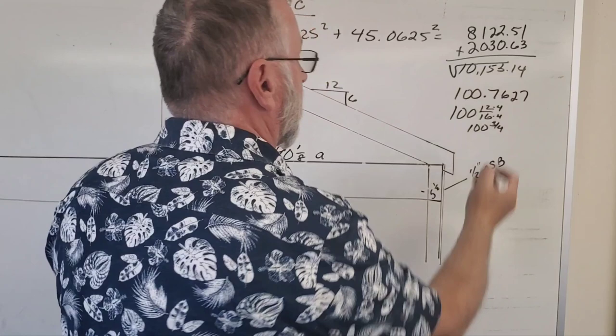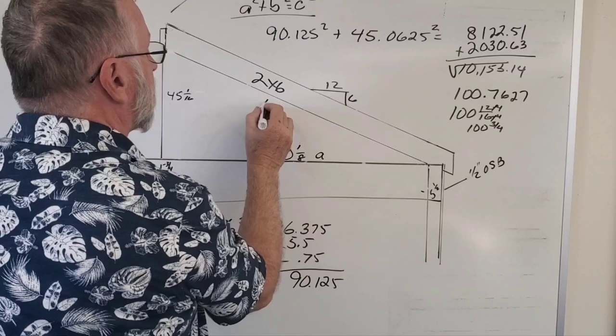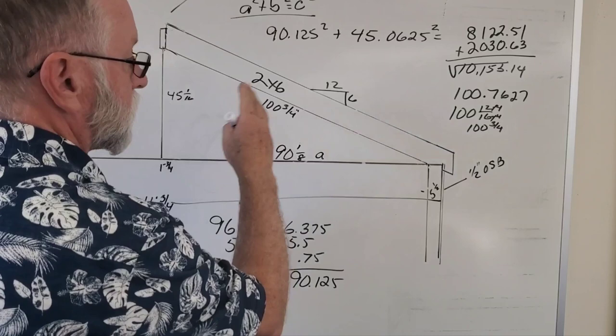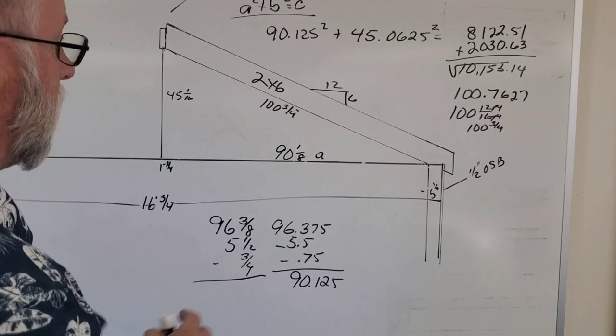So now I know that my rafter length, this bottom side of this triangle right here, is 100 and 3/4 of an inch. That's how you do it. It's not hard, simple math, but it's an easy way to not waste lumber.